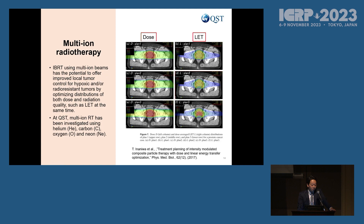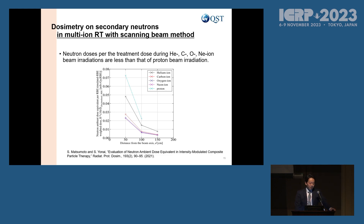We also evaluated neutron dose in multi-ion radiotherapy. IBRT using multi-ion beams has the potential to offer improved local tumor control for hypoxic and radioresistant tumors by optimizing both dose and radiation quality simultaneously. At QST, multi-ion radiotherapy has been investigated using helium, carbon, oxygen, and neon, and we will start multi-ion radiotherapy soon. The neutron dose per treatment dose during these ion beam irradiations is less than that of proton beam irradiation, and heavier ions offer less neutron dose per treatment dose.